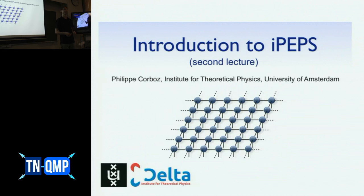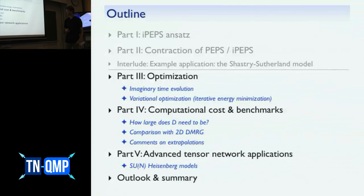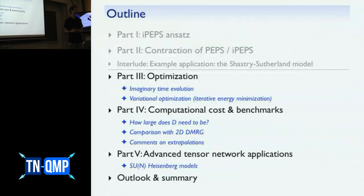Welcome everyone to this second part on the introduction to iPEPS. Yesterday we talked about iPEPS ansätze and different contraction methods, and today we're mostly going to focus on the optimization methods in iPEPS: imaginary time evolution algorithms and variational optimization schemes. I will also discuss computational cost, show additional benchmarks, and a comparison with 2D DMRG, and finally discuss some applications and results.